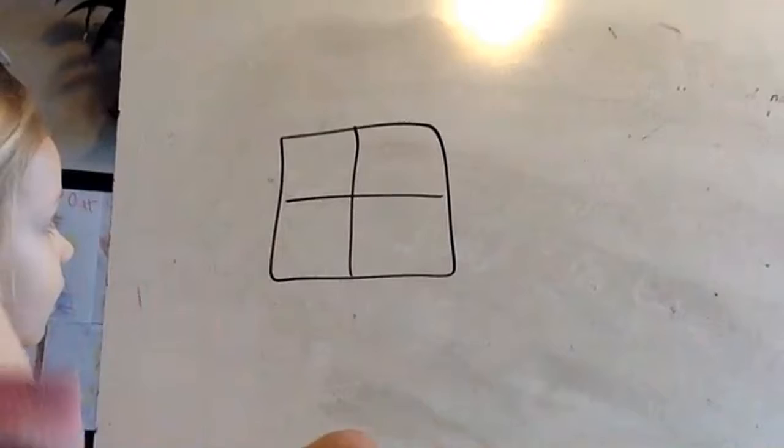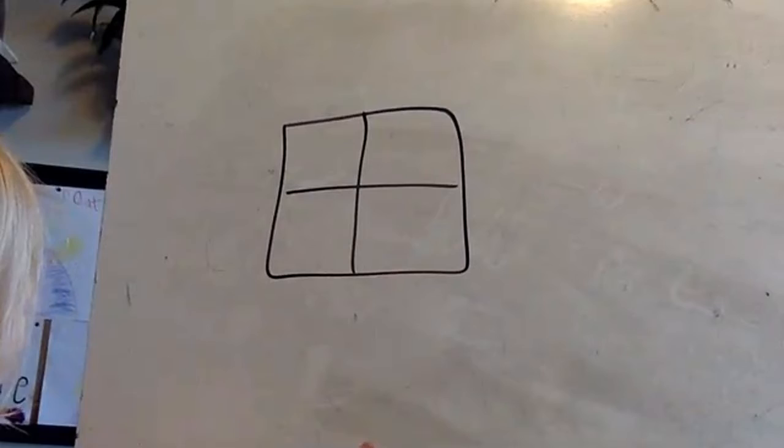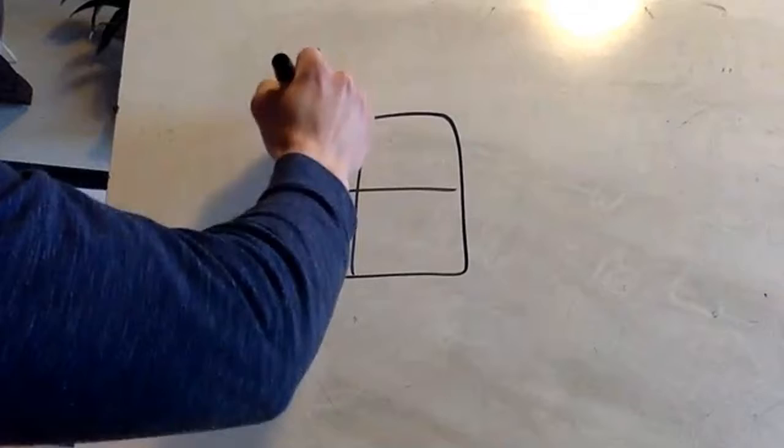We know what a Punnett square is — it's a square that looks like this. In normal inheritance we have capital letters and lowercase letters.